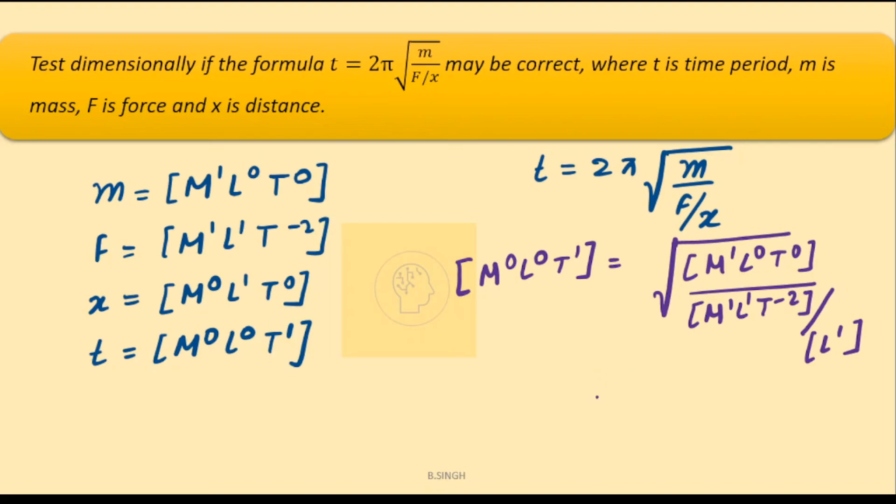Let's simplify it further. So we get here under root in the numerator m1 only because l is 0 and t is 0 whole divided by this l1 and that l1. This and this they will cancel out and you're left with m1, t minus 2.